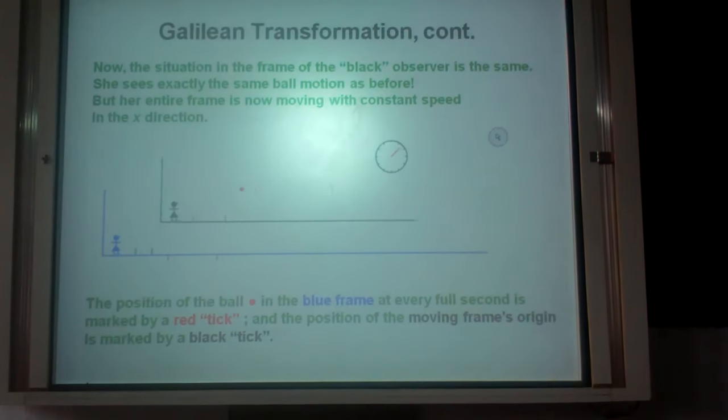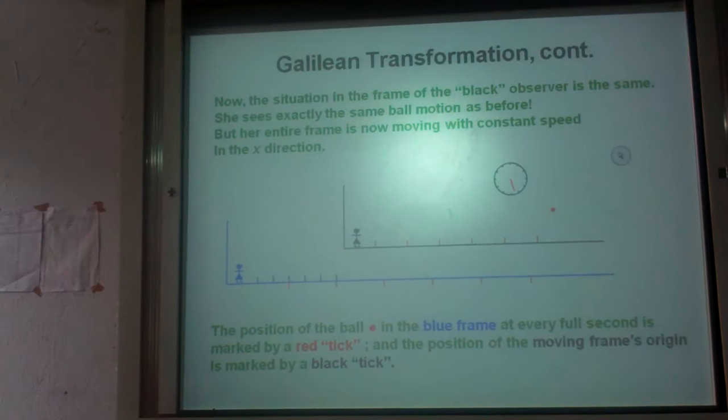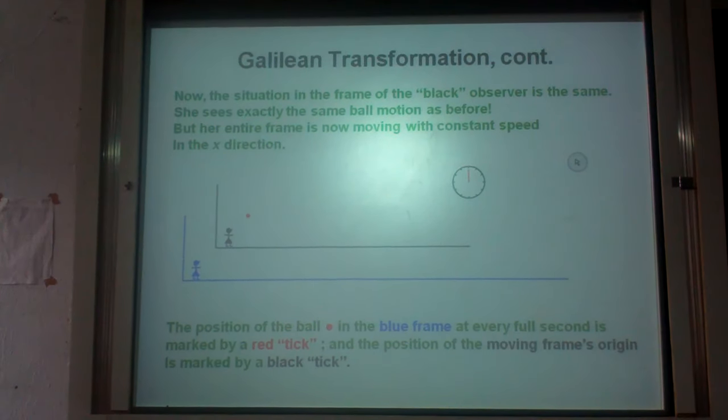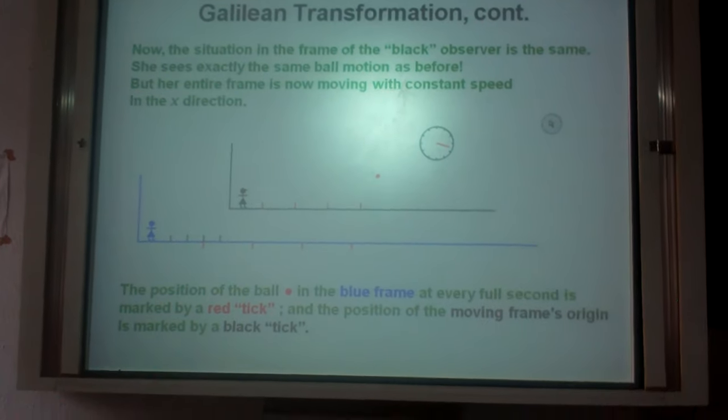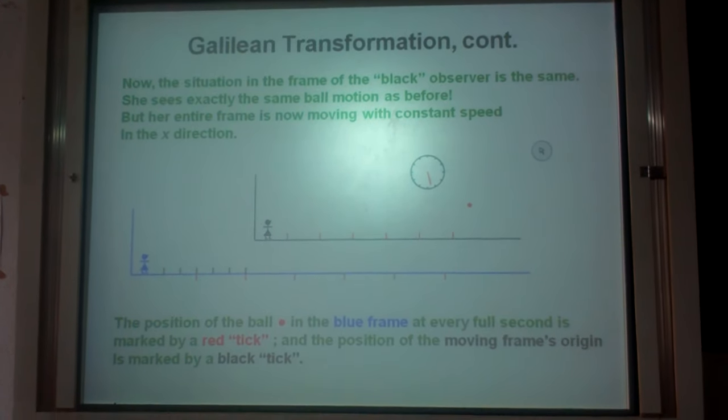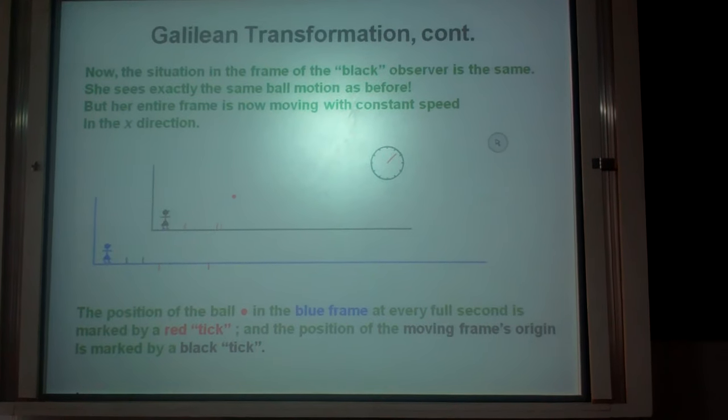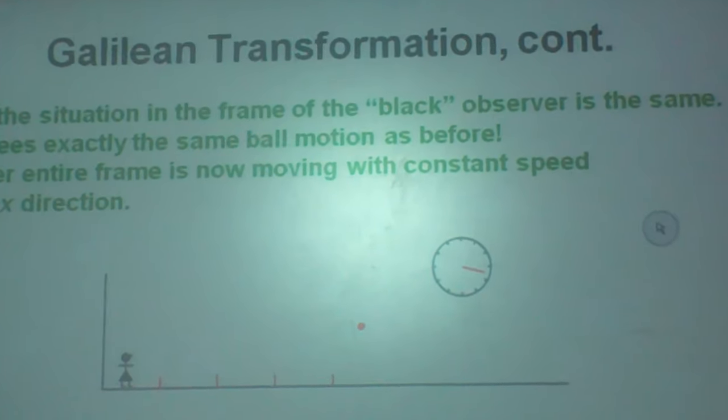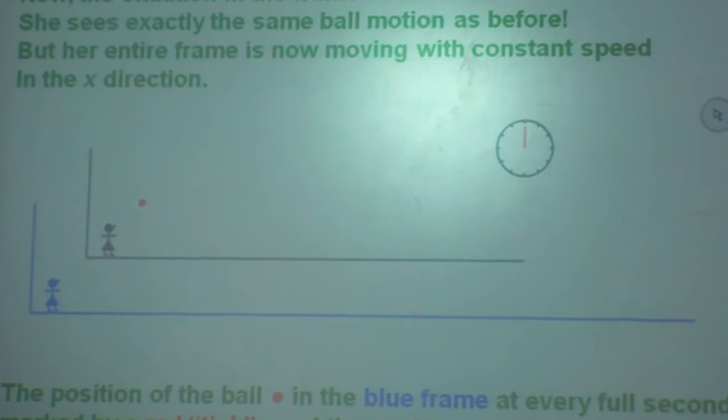Now let us see. Can you see the clock? Yes. The situation in the frame of the black observer is the same but sees exactly the same ball motion as before. The entire frame is now moving with a constant speed in which direction? X direction. Yes.